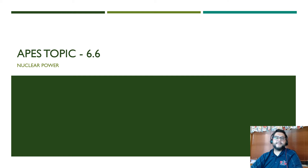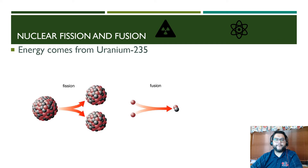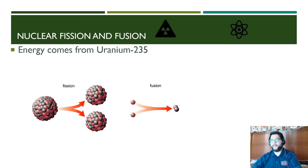Hey guys, this is Mr. V and this is Apes Review Video, Topic 6.6 on Nuclear Power. One thing to understand about a nuclear reaction is that it starts by having a very large isotope — in this case, uranium-235.